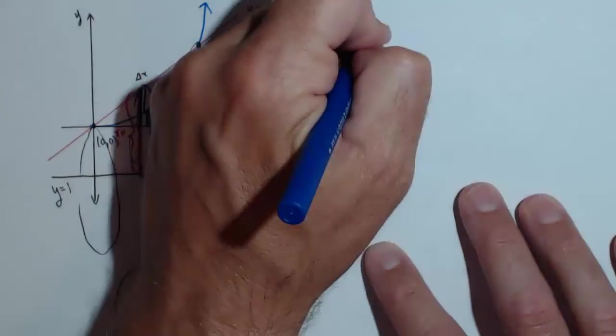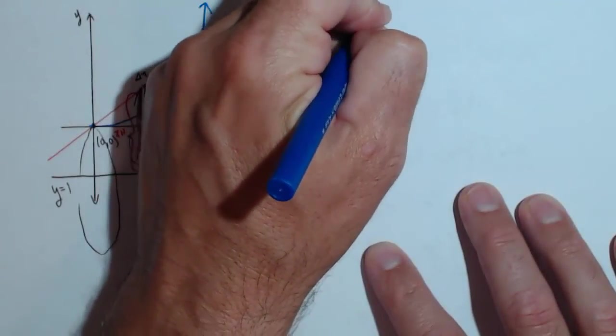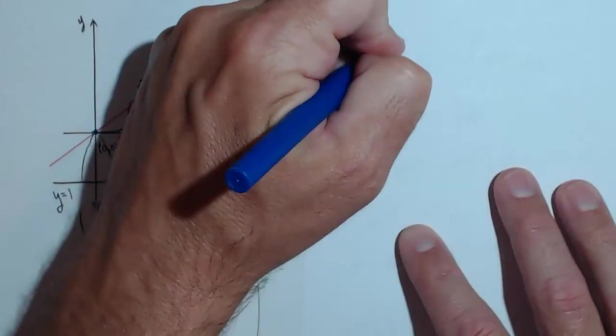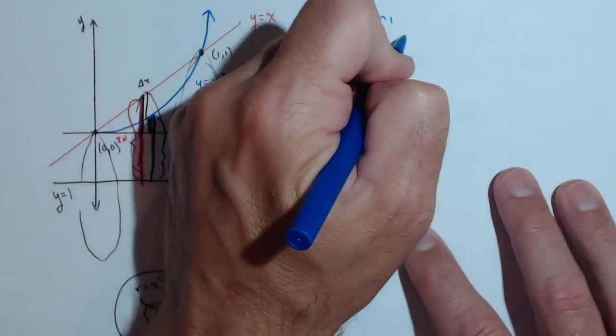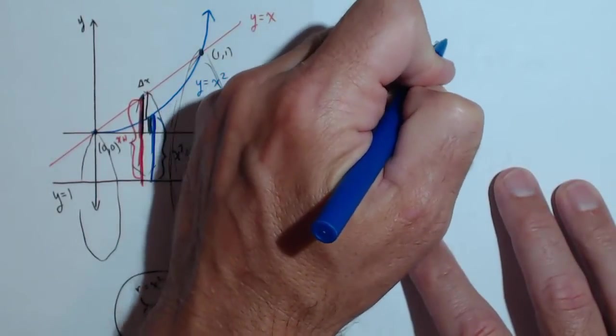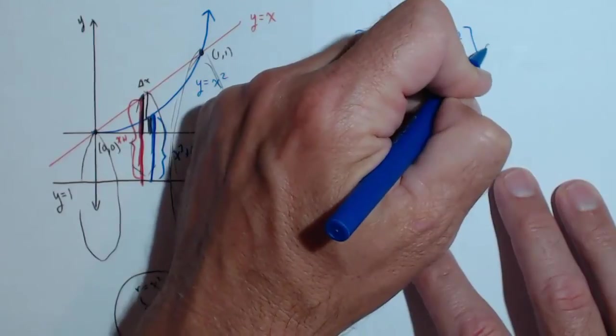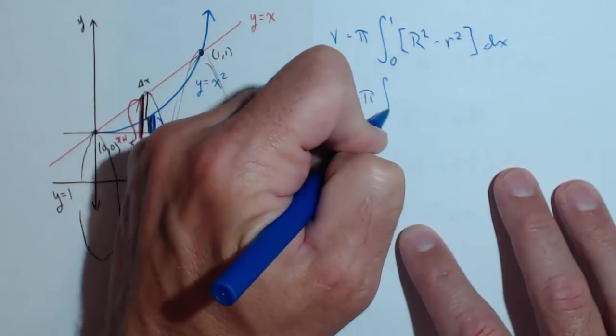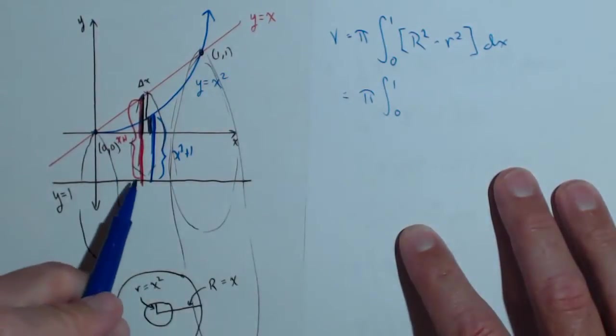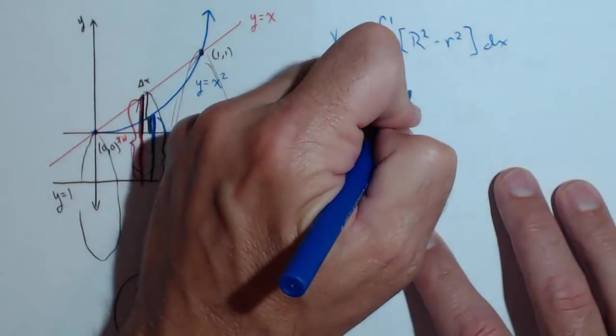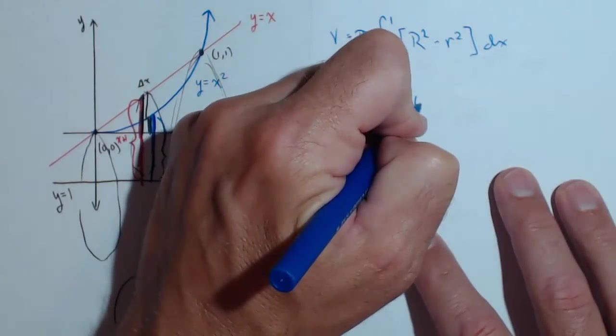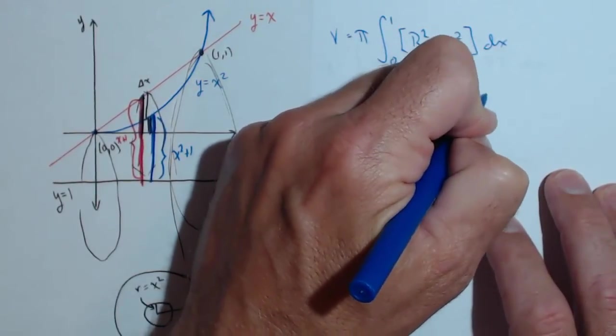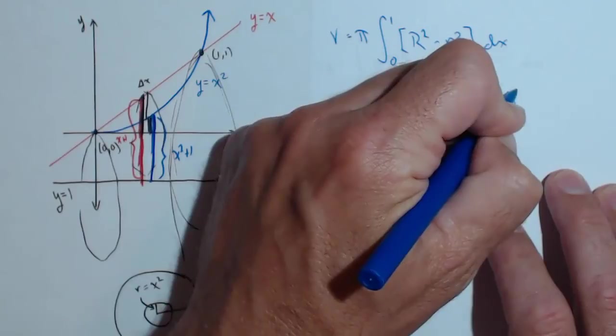So now when we go to set this up, we have pi. It's still going to be from 0 to 1 in terms of x's. It's still going to be the big radius squared minus little radius squared. All that's changed is what our radii are. And in this case, all we're doing is adding 1. So it's going to be x plus 1 squared for the big radius minus x squared plus 1 squared.